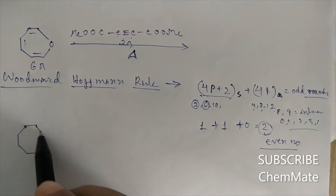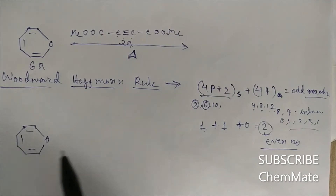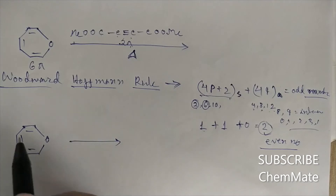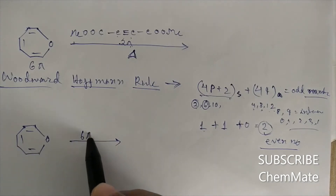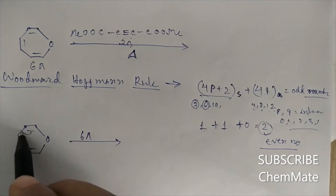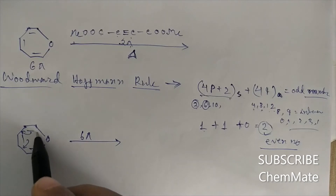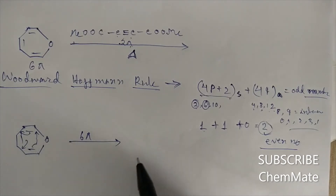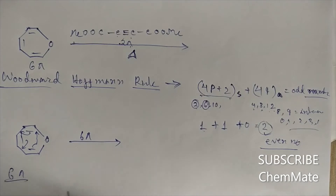Since direct cycloaddition is not possible under thermal conditions, the 6π component will instead undergo an electrocyclic ring-closing reaction. So an electrocyclic ring closing will happen here for the 6π electronic system.